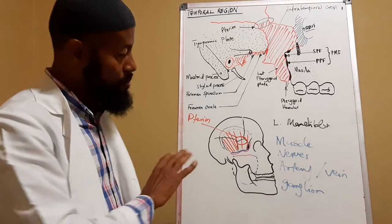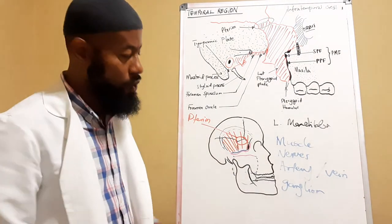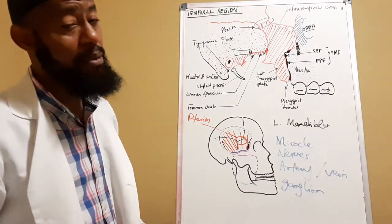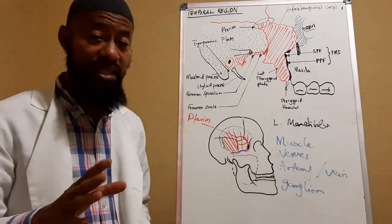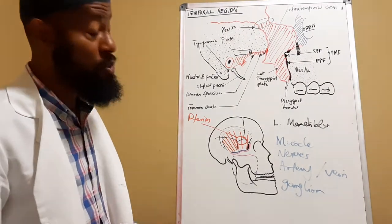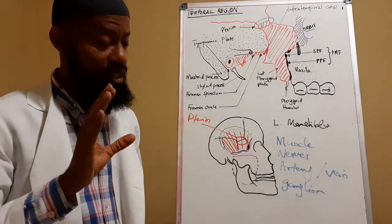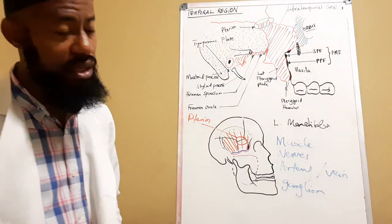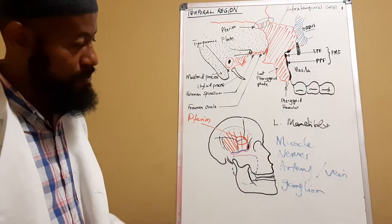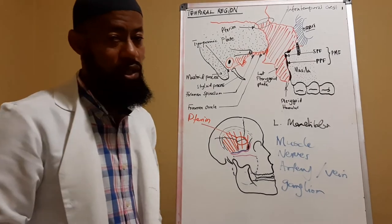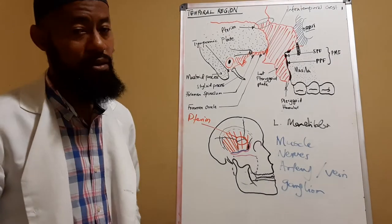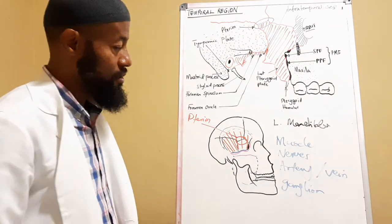Most importantly, the artery found here is the maxillary artery, one of the two terminal branches of the external carotid artery — the other being the superficial temporal artery. The maxillary artery gives 15 branches within this region, which we will discuss next. The pterygoid plexus is the venous plexus in this region, and the ganglion present is the otic ganglion, which we discussed earlier in relation to the nerve supply of the parotid gland.